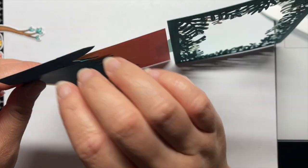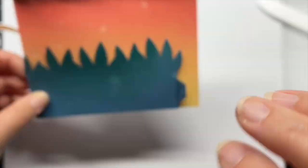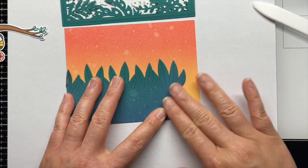Here you can see how the scored edge will fold behind the panel and the tab will eventually be inserted into the background panel.